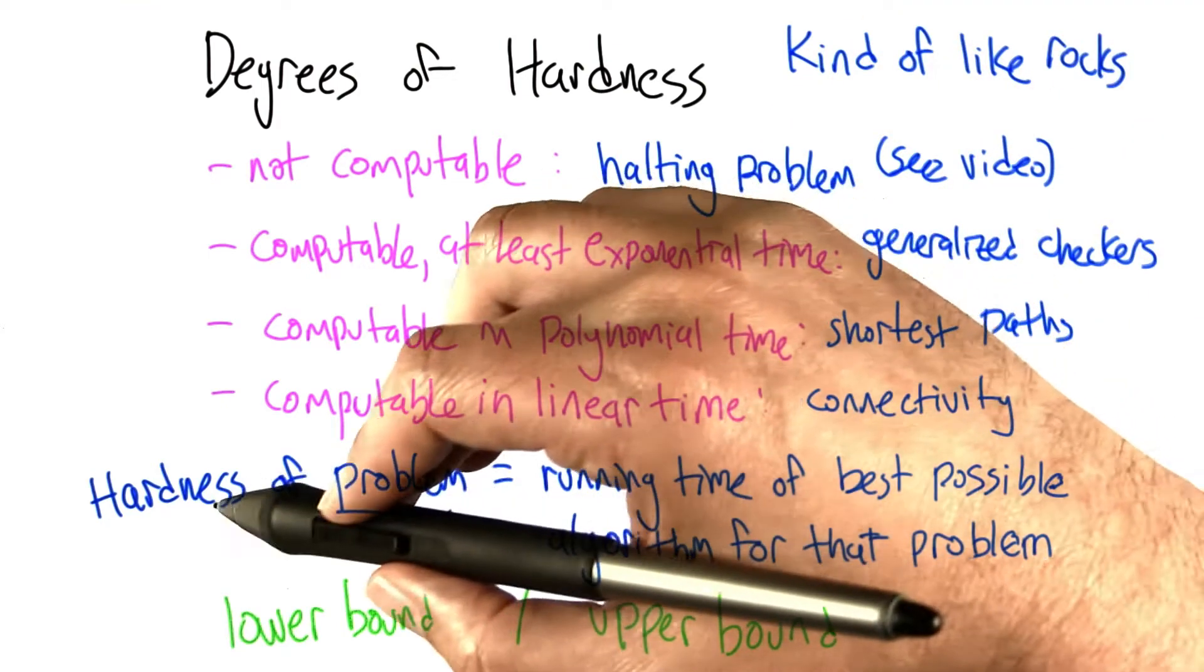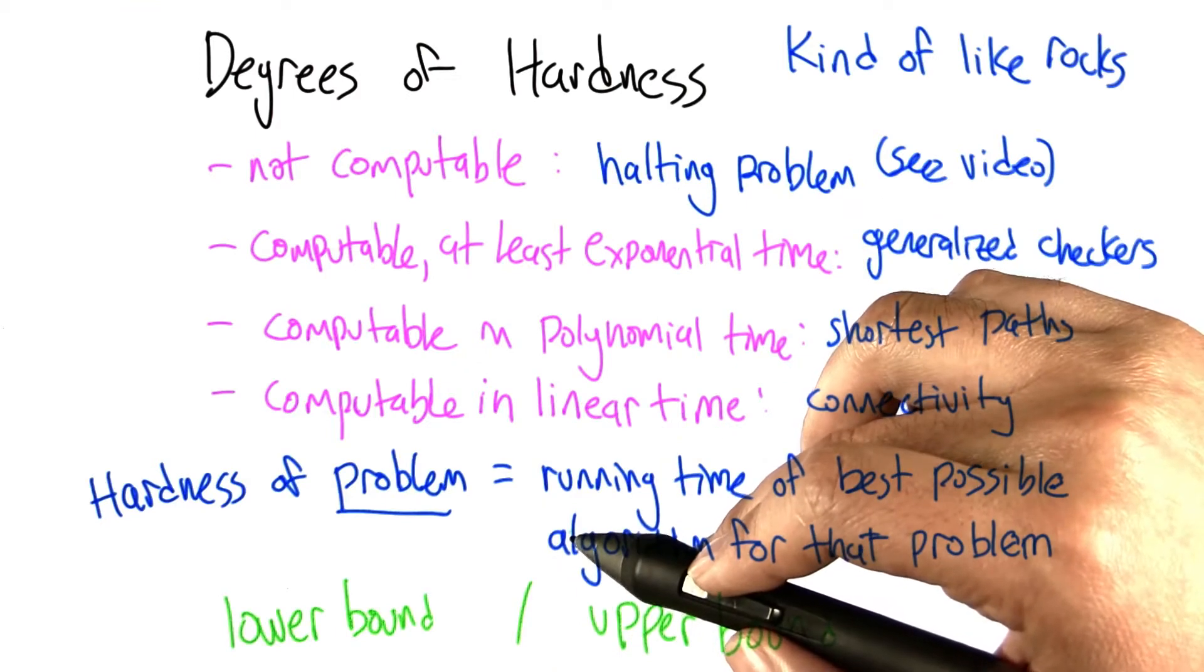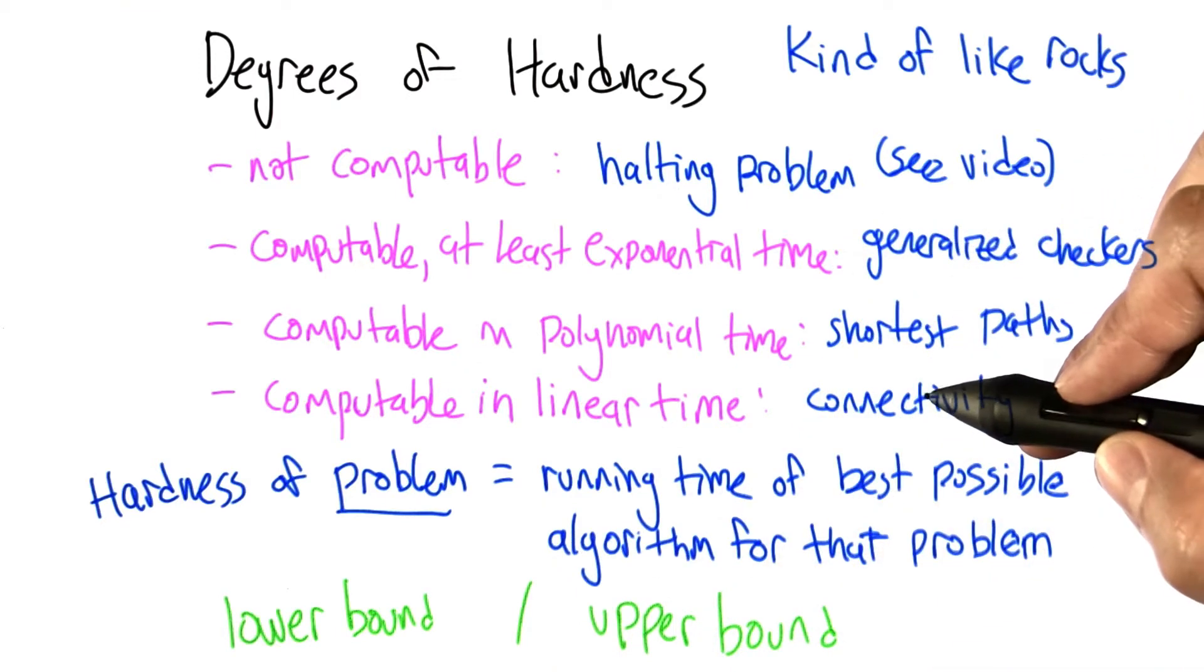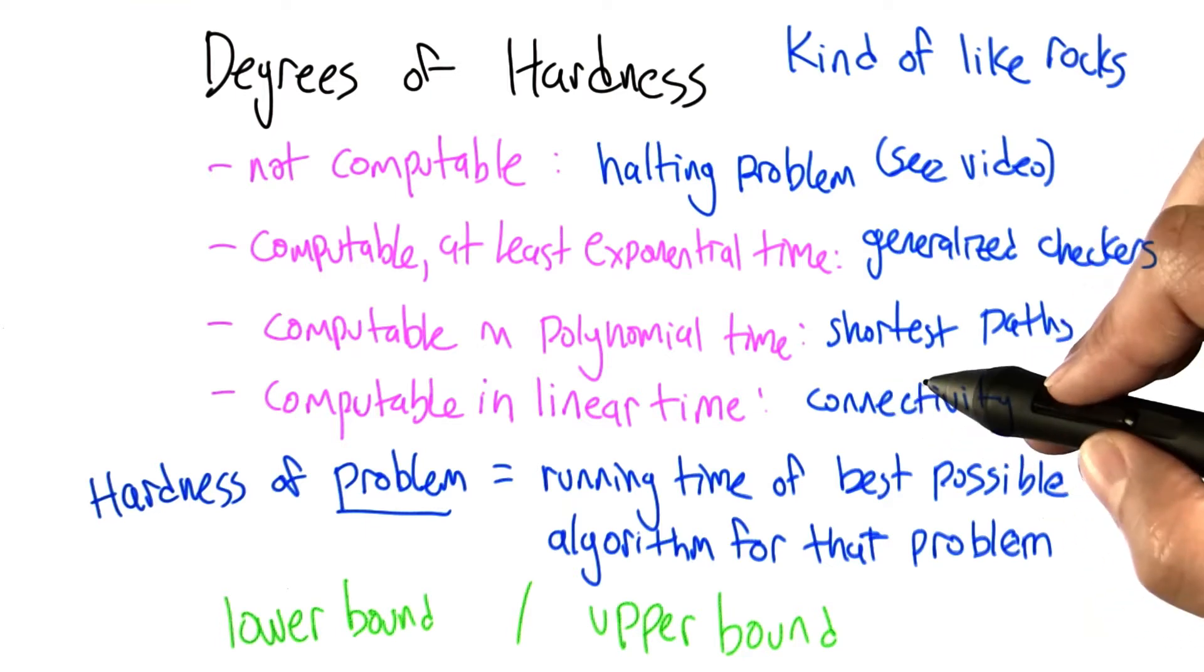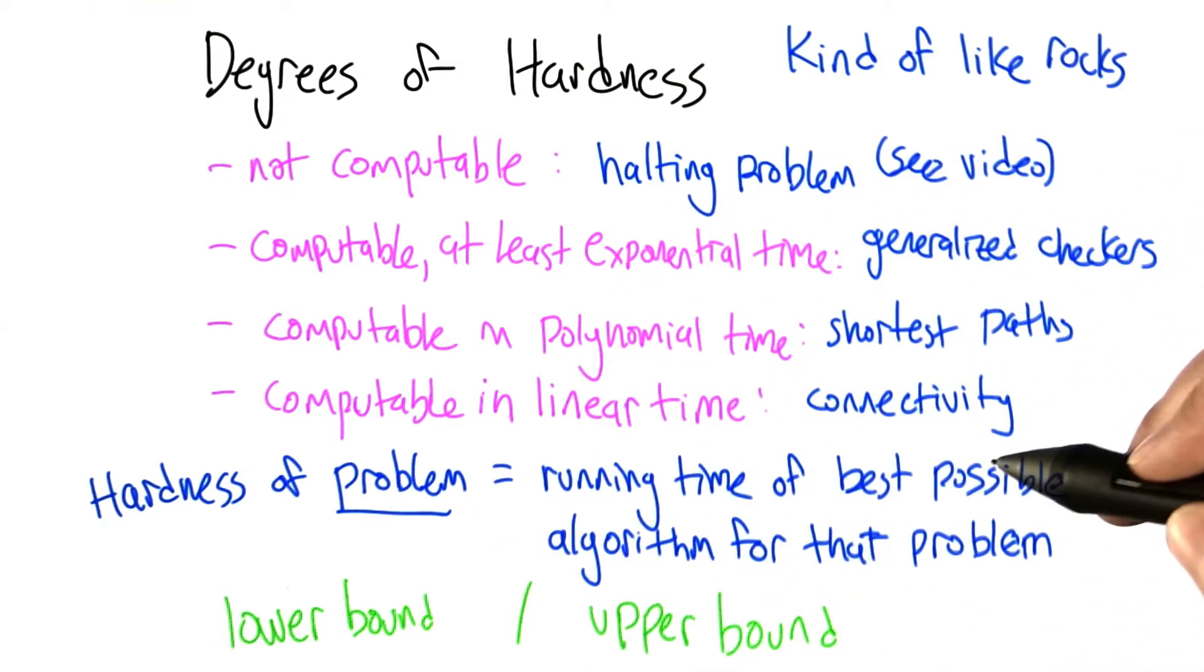The way we think about this is the hardness of a problem, like how connected are two nodes in a graph, or are two nodes in a graph connected? The hardness of the problem is the running time of the very best possible algorithm for that problem.